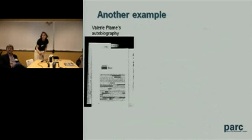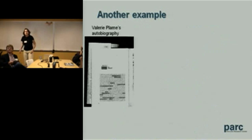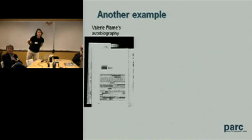So you might say it's likely that someone who sees that document is going to infer that it's actually about the Finland family, even though those words don't appear anywhere. One more example we'll refer to later — this is a screenshot, I apologize you can't read this at all, it's a scan from Valerie Plame's book.